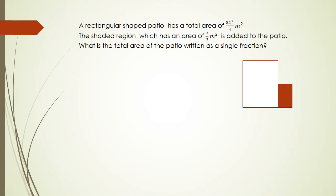So what we have is a question here that says a rectangular shaped patio has a total area of 3x squared over 4 meters squared. So basically this part here is 3x squared over 4. The shaded region, which has an area of x over 3 meter squared, is added to the patio. What's the total area of the patio written as a single fraction? So we've got the two areas that we need to actually add up together and write it as a single fraction.